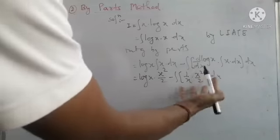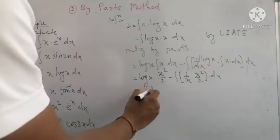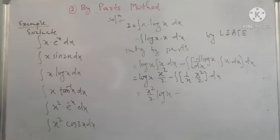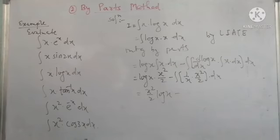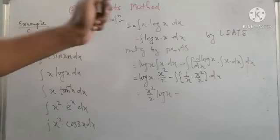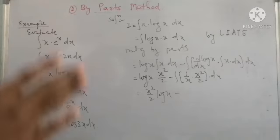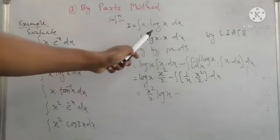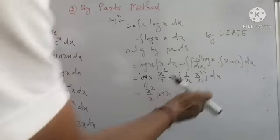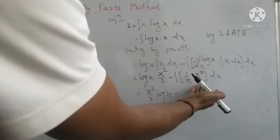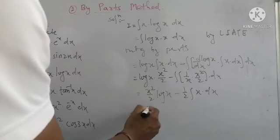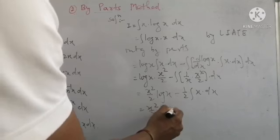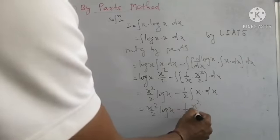Simplifying the bracket: x cancels and the constant 1/2 is taken outside the integration, leaving only x inside. The result is (x²/2)·log(x) minus (1/2)·(x²/2) plus C, which gives (x²/2)·log(x) minus x²/4 plus C.